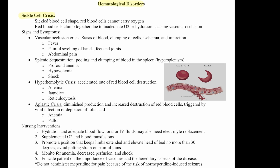A sickle cell is the shape of the blood cell. Instead of being a circle like normal, it is sickle-shaped — a half moon. These red blood cells cannot carry oxygen, and they clump together due to inadequate oxygen or hydration, causing vascular occlusion, and this can be very painful.